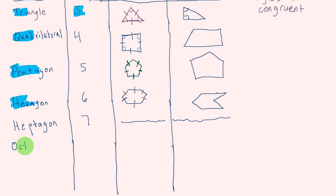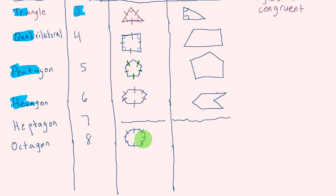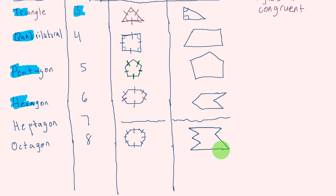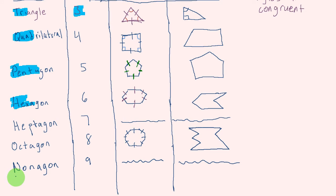We have an octagon — it has eight sides. This is the shape that looks like a stop sign. All of the side lengths are congruent — one through eight — and we have eight congruent angles as well. I can also draw an octagon that is not a regular polygon. A nine-sided figure we would call a nonagon, and a decagon is a ten-sided figure with ten sides or ten angles.